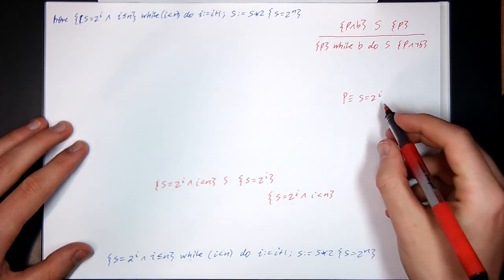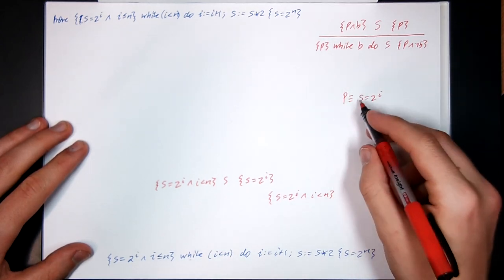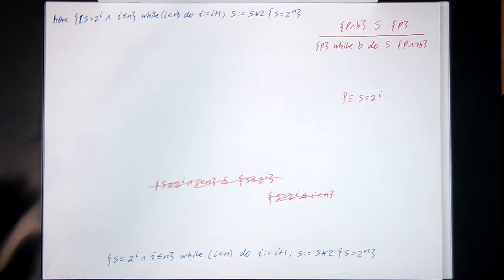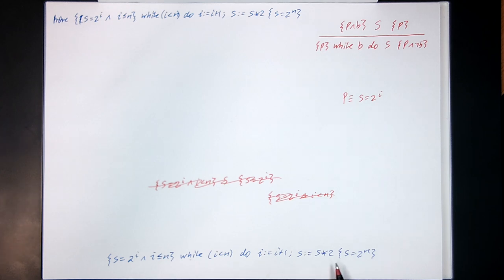So P equals S, an invariant of S equals 2 to the I won't do. We need more stuff.